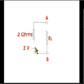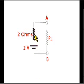Thus this network can be replaced by a single voltage source of 2 volts with internal resistance of 2 ohms connected in series with it.